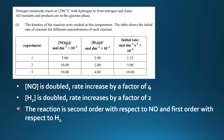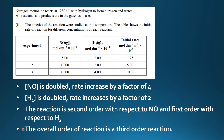So the reaction is second order with respect to nitrogen monoxide and first order with respect to hydrogen. The overall order of reaction is third order. We can write the rate expression: rate equals K times the concentration of NO raised to the power of two — because it's second order with respect to nitrogen monoxide — multiplied by the concentration of hydrogen.